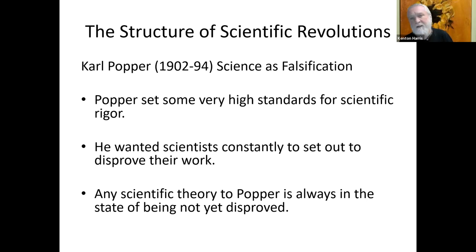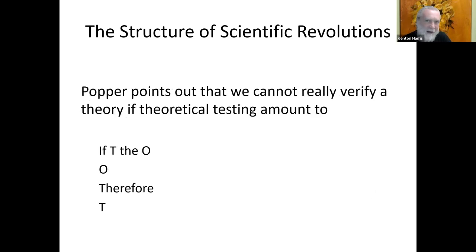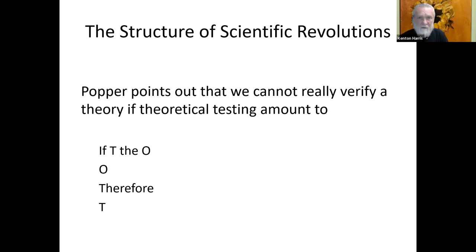Popper wanted scientists to consistently set out to disprove their work. Any scientific theory, according to Popper, was always in the process of being disproved — or rather, it just hasn't been disproved yet. What he's pointing out is that you can't actually verify a scientific theory. Imagine setting up an experiment: if theory T is true, I should have observational result O. I run the experiment, O occurs — just what my theory predicted, therefore my theory is true. But Popper points out that's a fallacy — affirming the consequent.